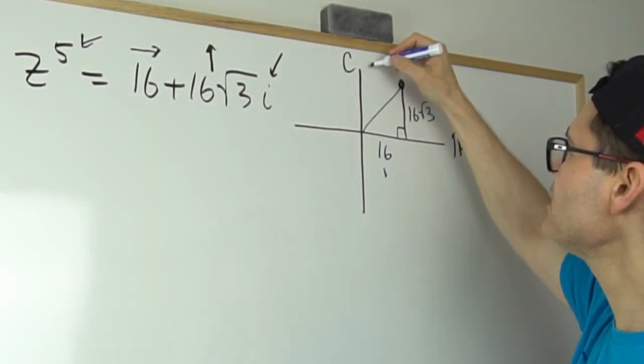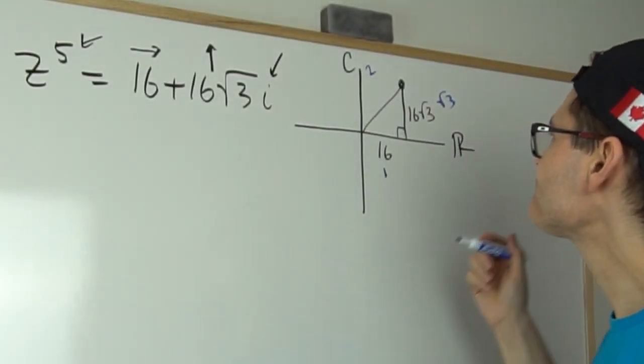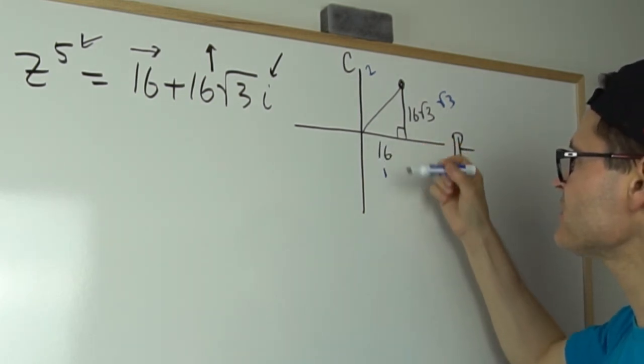If that was a 1, a 2, a √3, then you would know the angles on the inside because it's a special triangle. So all they've done there is they've scaled it up by a factor of 16.